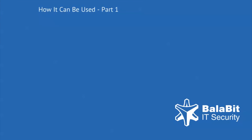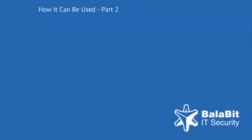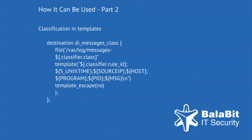Once a pattern has been written, it can be included in a syslogng configuration file. In this example, the pattern is used to filter messages that match the violation class, which is a string. All messages from the log source S underscore all will be filtered, and the destination for the filtered messages is DI underscore class underscore violation. The message class is used in the file name, while the rule ID, which matched the message, is used as the first column in the custom message template.